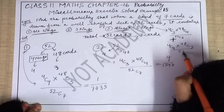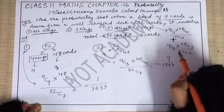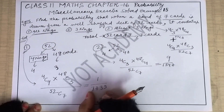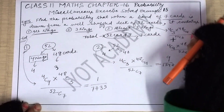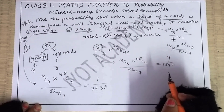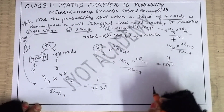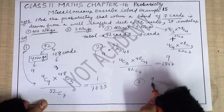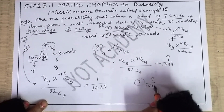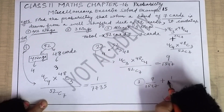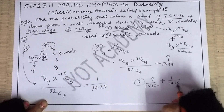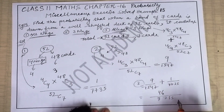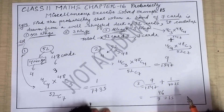If you have already solved the first two conditions, you can directly add those answers to get the third condition's answer. So the answer is 9/1547 plus 1/7735. Take the LCM of these to get the final answer. So the third condition's answer is also found — it is very easy, just a matter of selection based on the given condition.